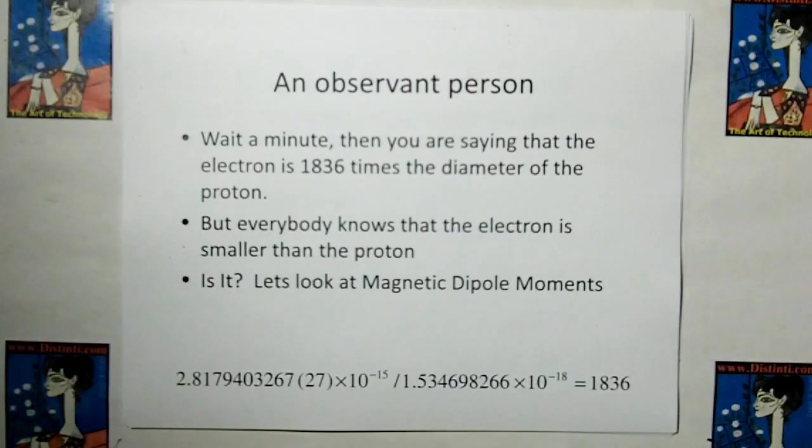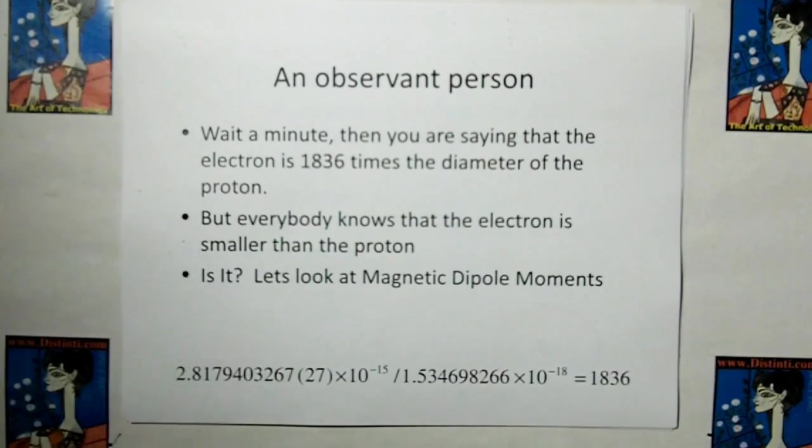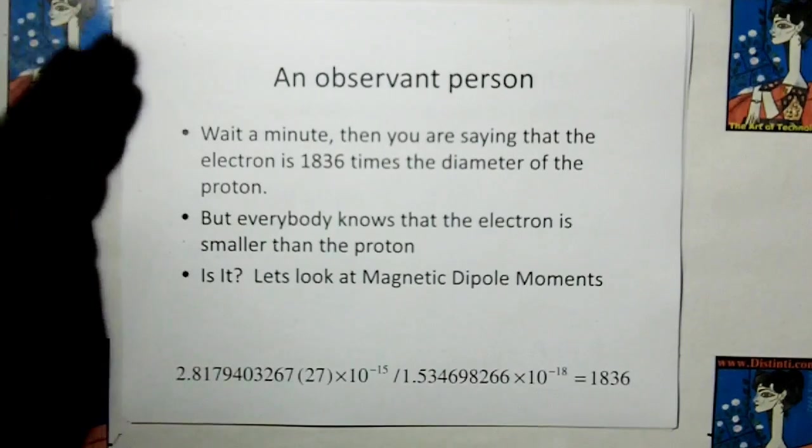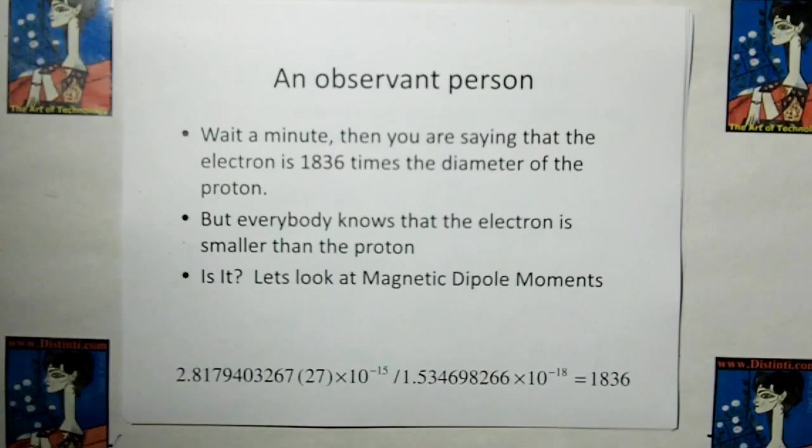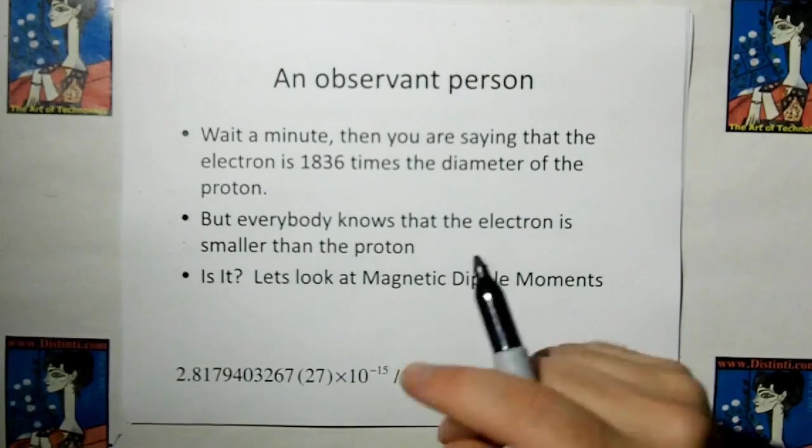But an observant person would say, wait a minute. Then are you saying that the electron is 1836 times the diameter of the proton? I mean, if you divide the diameter of the electron with the diameter of the proton, you get 1836. But everybody knows from school that an electron is smaller than a proton. And I say, well, is it? Well, let's look at the magnetic dipole moments.